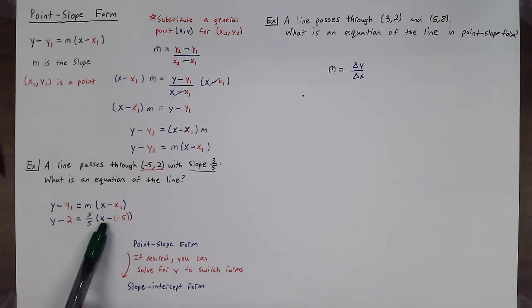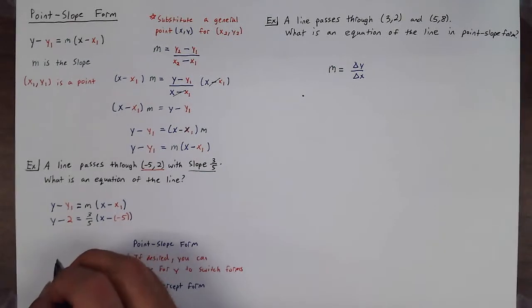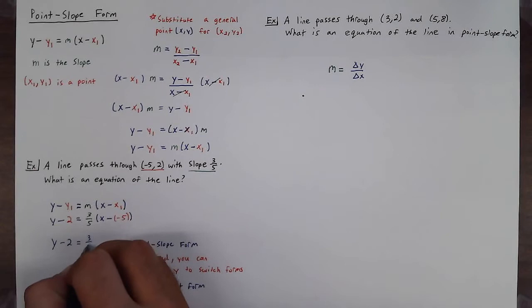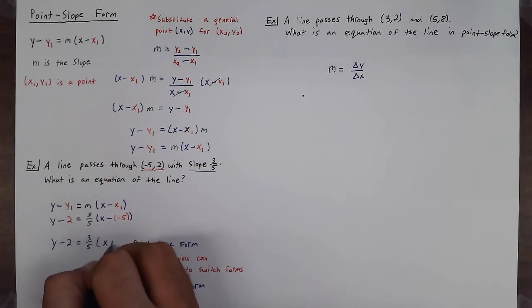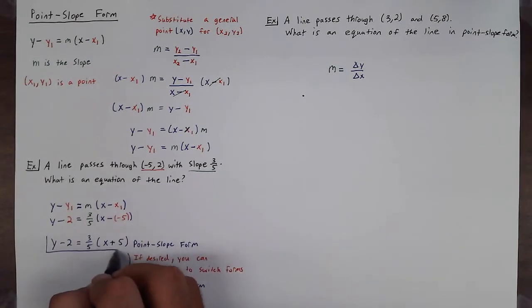The slope for our equation is three-fifths, so for the m spot I'm going to put three-fifths. Now as soon as I simplified this statement on the right with x minus negative five and change that to an x plus five, we have our answer: y minus two is equal to three-fifths times x plus five. That is point-slope form.